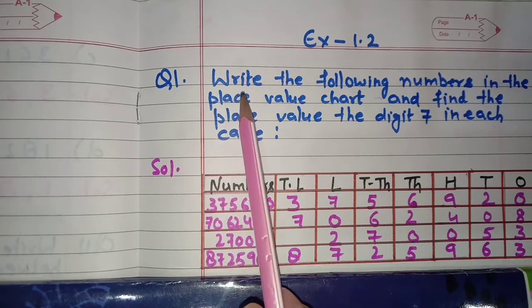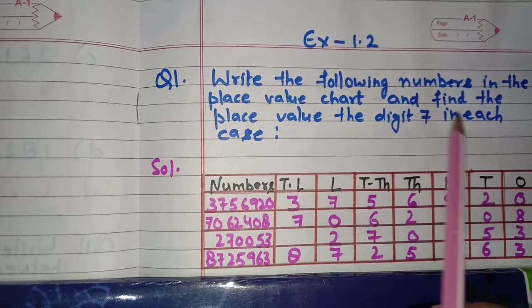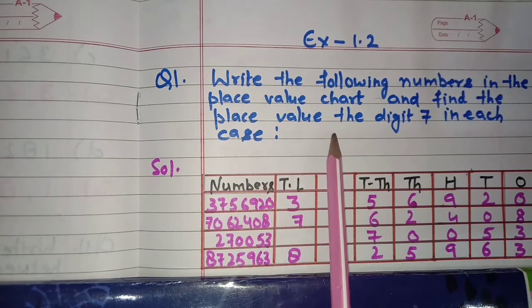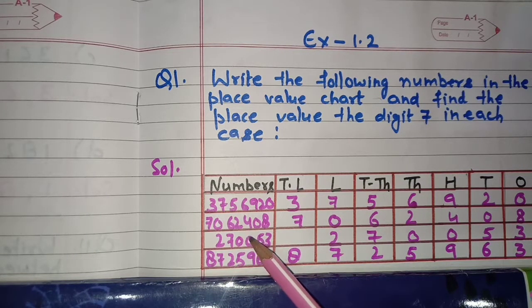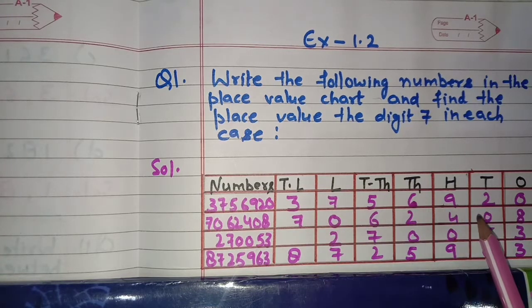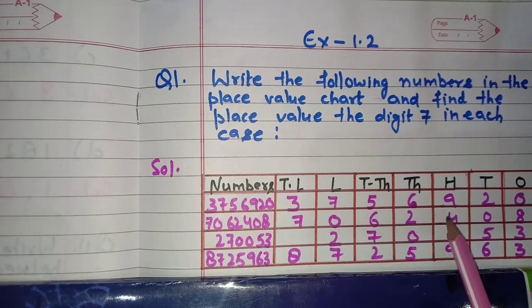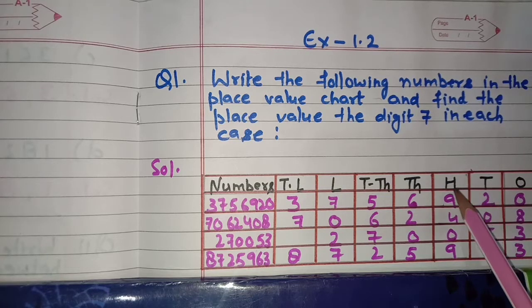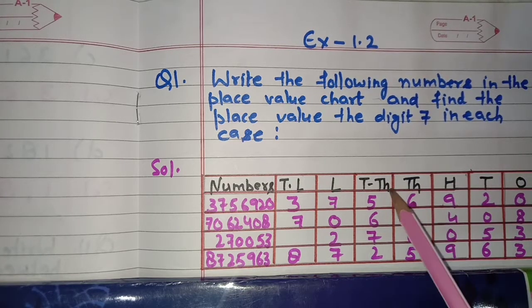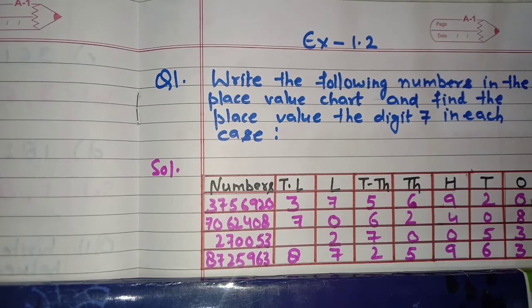Question number one: write the following numbers in the place value chart and find the place value of the digit 7 in each case. Some numbers are given; we need to write these numbers in the place value chart and find the place value of digit 7. First, we will make a place value chart with: Ones, Tens, Hundreds, Thousands, Ten Thousands, Lakhs, and Ten Lakhs.